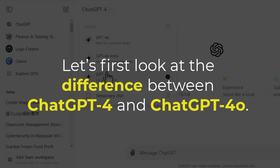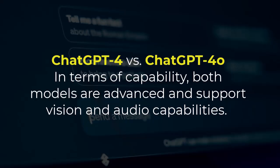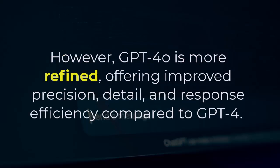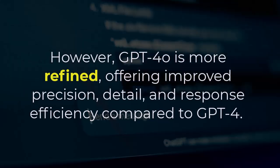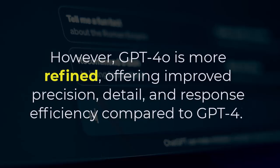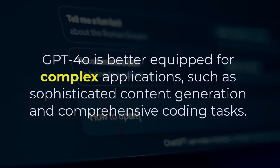Let's first look at the difference between ChatGPT 4 and ChatGPT 4.0. In terms of capability, both models are advanced and support vision and audio capabilities. However, GPT 4.0 is more refined, offering improved precision, detail, and response efficiency. It is better equipped for complex applications, such as sophisticated content generation and comprehensive coding tasks.